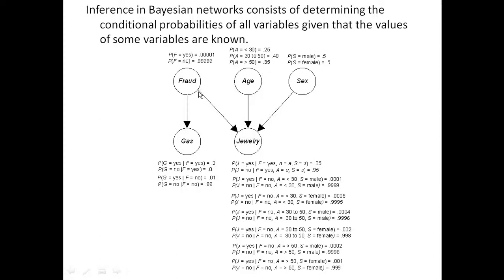And this is only a subset of the variables, but this is the fraud variable. The probability of fraud equals yes is very small, .00001.